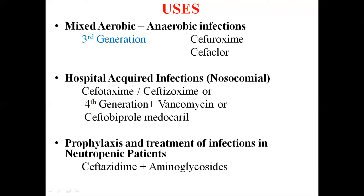For hospital-acquired or nosocomial infections causing respiratory or ICU infections — most of which are resistant to commonly used antibiotics — we can first try third generation cephalosporins like cefotaxime or ceftizoxime; if not effective, the fourth generation cephalosporin along with vancomycin can be used, or as an alternative, the fifth generation ceftobiprole medocaril. For prophylaxis and treatment of infections in neutropenic patients, ceftazidime alone or in combination with aminoglycosides is very effective for prevention of Pseudomonas infections.